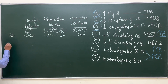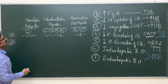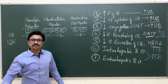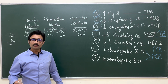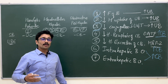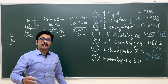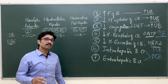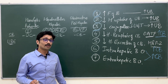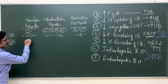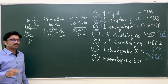Now let us see the urobilinogen levels. In case of hemolytic or pre-hepatic jaundice, there is increased bilirubin production. This excess unconjugated bilirubin reaches the liver, and the liver functions more, forming more conjugated bilirubin. That conjugated bilirubin reaches the intestine and is converted by the intestinal bacterial flora into more urobilinogen. So urobilinogen levels are increased in case of hemolytic or pre-hepatic jaundice.